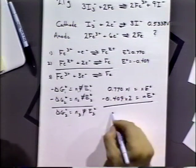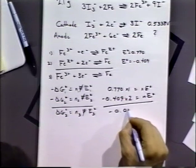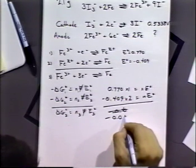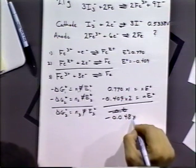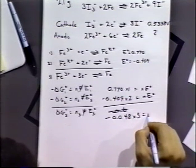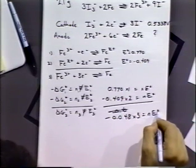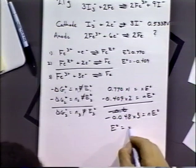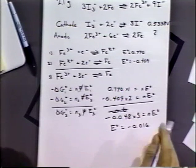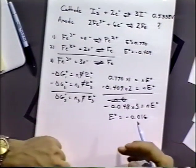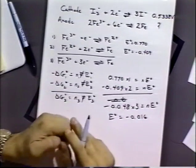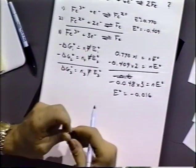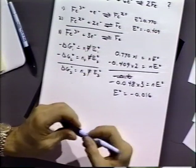And the second one would be minus 0.409 times 2 is equal to N E0. And we get a result that's minus 0.048 times N, which is 3, equals to N E0. And so E0 in this case for the reaction 3 is minus 0.016. And so in this case where we're adding the half cell reactions together to get a new reaction, we do have to take into account the number of electrons involved in the system because we have to consider it as being a sum of free energies.